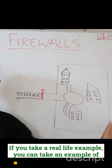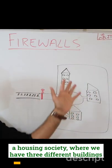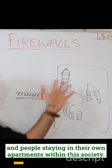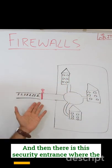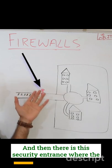If we take a real-life example, take an example of a housing society where we have three different buildings and people staying in their own apartments within this society. And then there is this security entrance where the security...